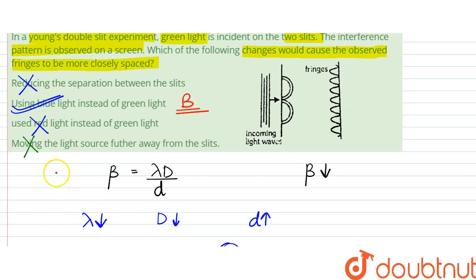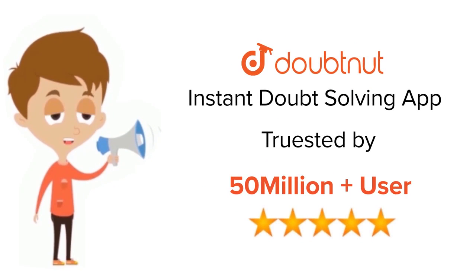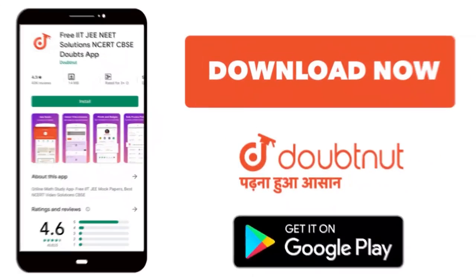So only option that is helping us is option B, that is using blue light instead of green light. That is our answer. Thank you. For class 6-12, IIT-JEE and NEET level, trusted by more than 5 crore students, download Doubtnet app today.